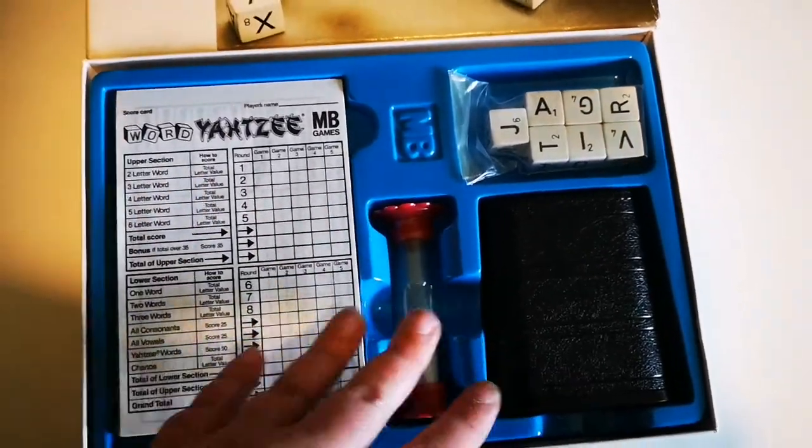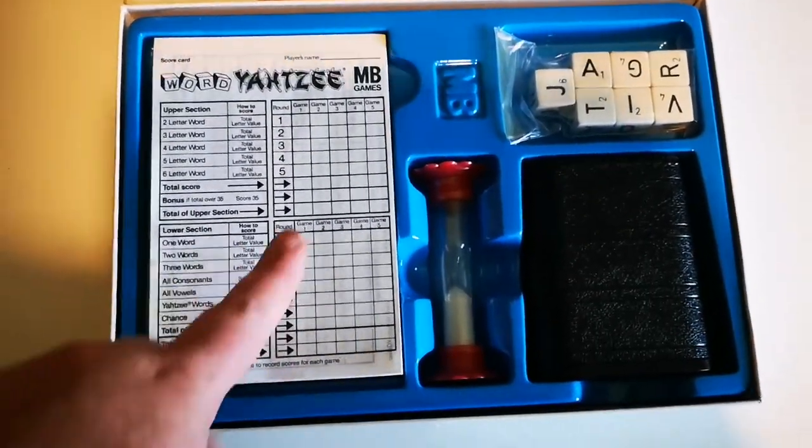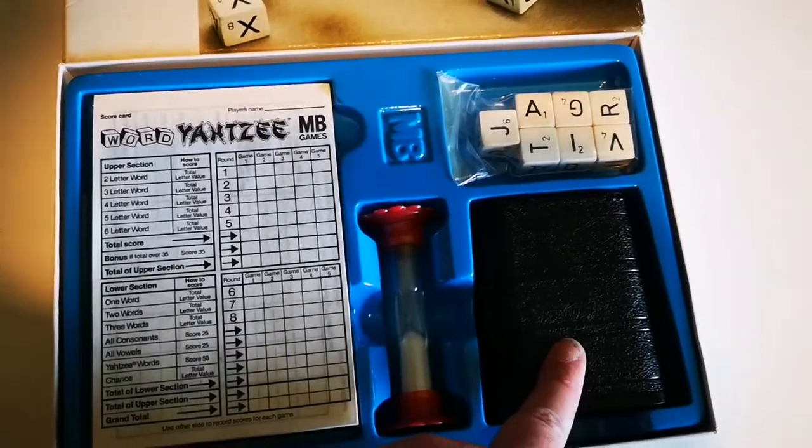But basically this is what you should have in your box. So you've got your score pad, you've got your seven dice, you've got a timer and a little dice shaker.